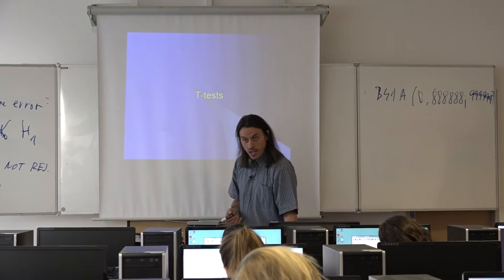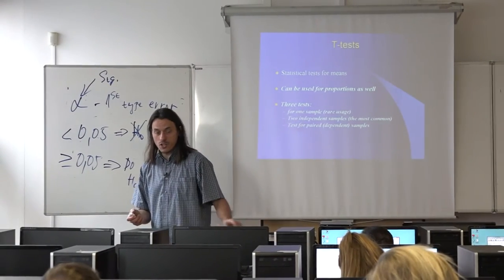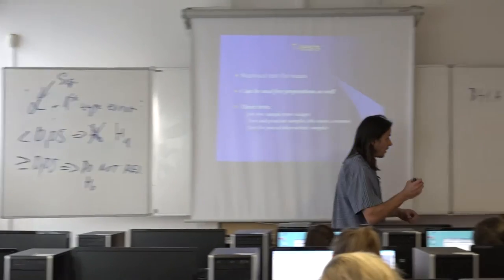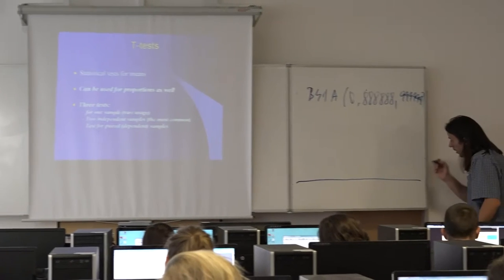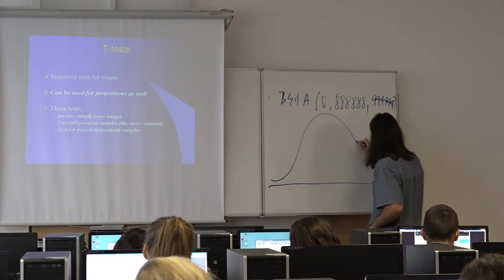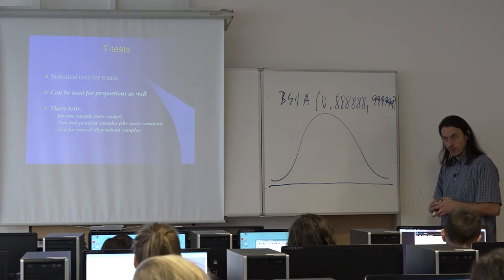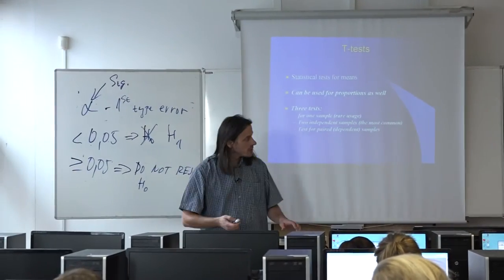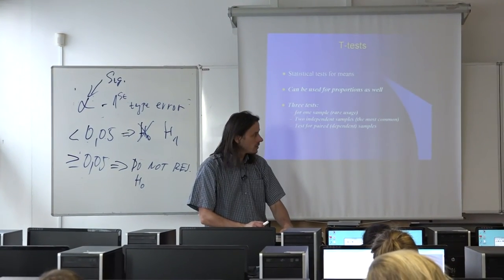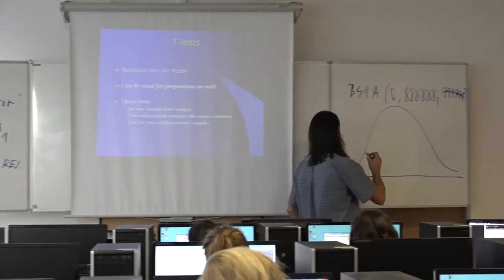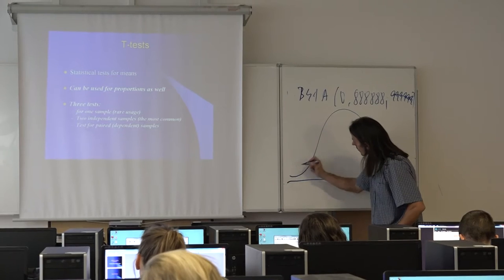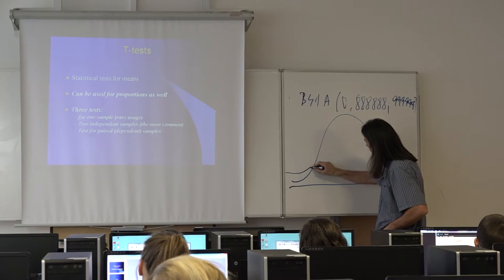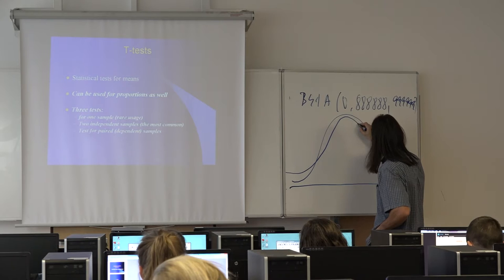The T in T-tests stands for the T-distribution, which is a well-known statistical distribution very similar to the normal distribution. The normal distribution curve is a bell-shaped curve. The T-distribution is very similar, but it has heavier tails — it extends longer on the left and right sides.